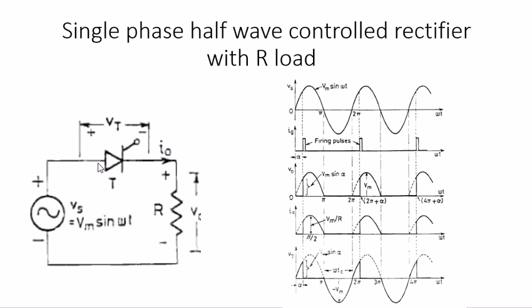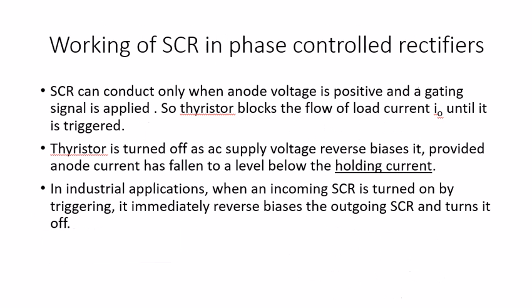Even if we trigger, the current will not pass because the input current will be low. So we have seen the holding current in that simple diagram.